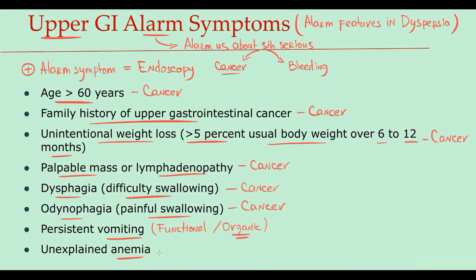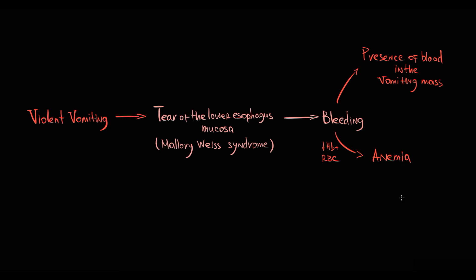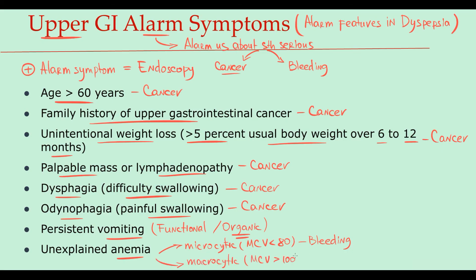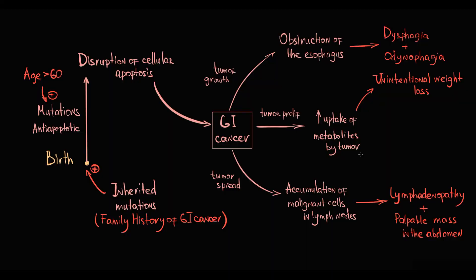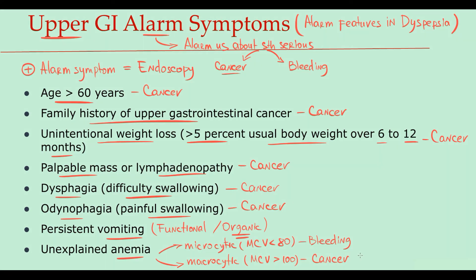Anemia in blood analysis is also an indication for upper endoscopy. If microcytic anemia is present — recall that microcytic anemia is an anemia with MCV less than 80 — we can assume that probably the cause of anemia is chronic bleeding, so we will search for an ulcer, for example. Or if anemia is macrocytic, which is anemia with MCV greater than 100, then we assume that probably the anemia is caused by a cancer, because cancer cells, in order to proliferate, massively consume folic acid for DNA synthesis. This will cause folic acid deficiency that will manifest as macrocytic anemia. So anyway, anemia requires further investigation and because of that we refer such patients for upper endoscopy.